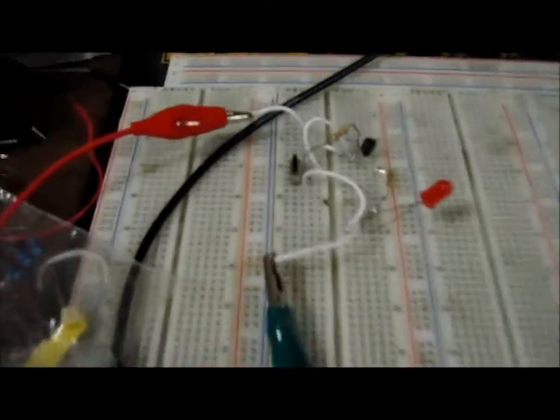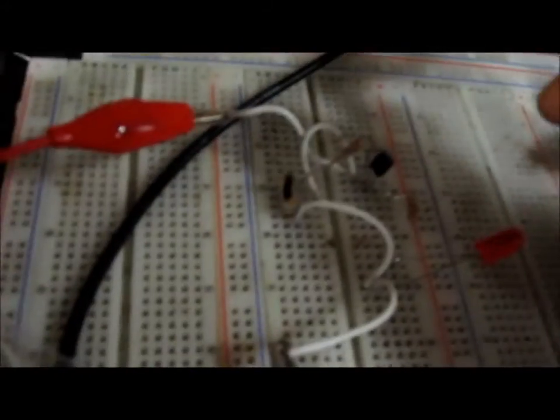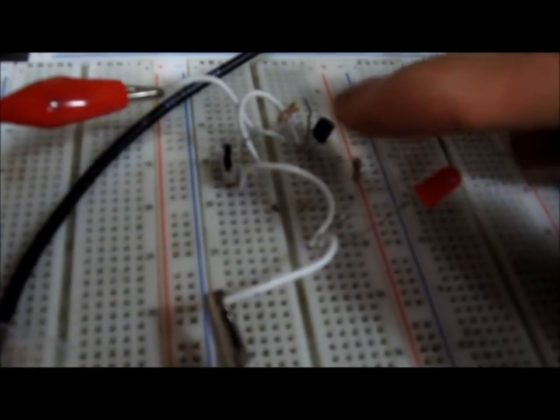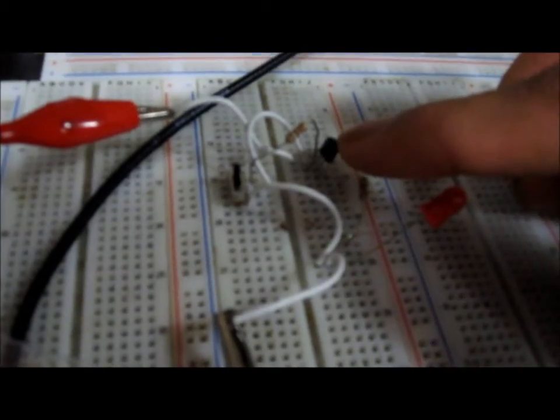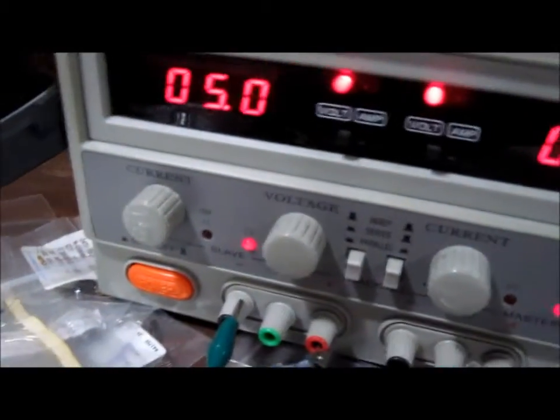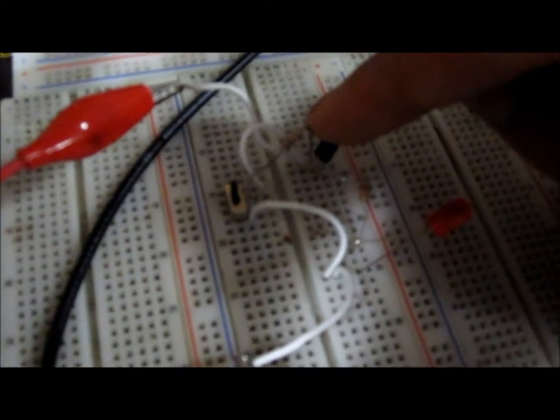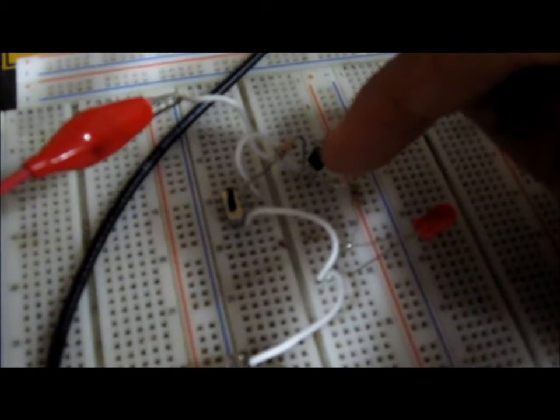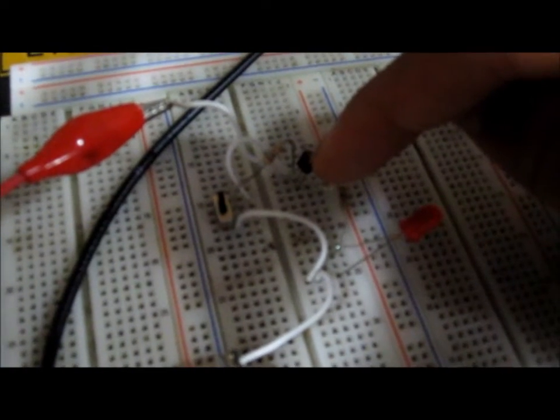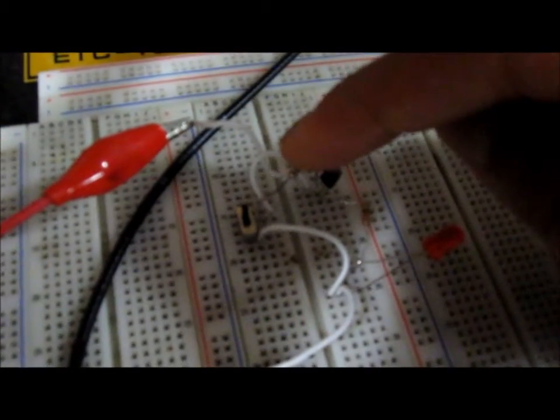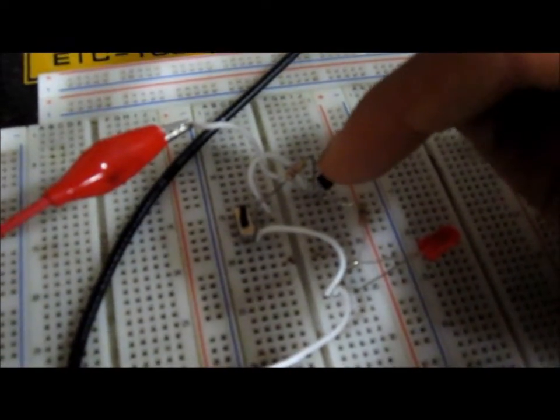That's why it's connected this way. In our circuit here, I'm using a 2N3906 PNP transistor. I'm using 5 volts to power the circuit, which is connected to the emitter terminal. The leftmost pin is the emitter terminal, the middle is the base terminal, and the rightmost is the collector terminal.